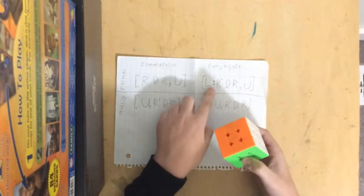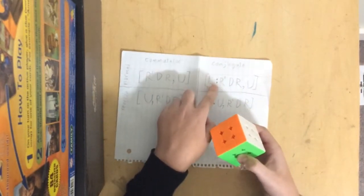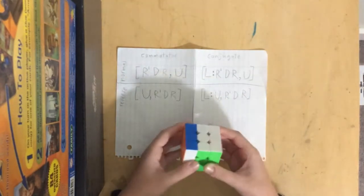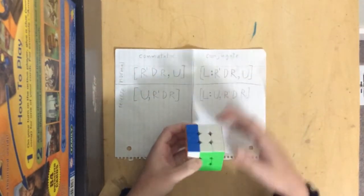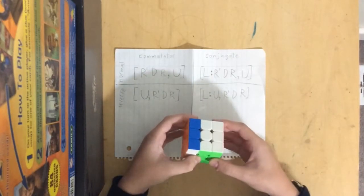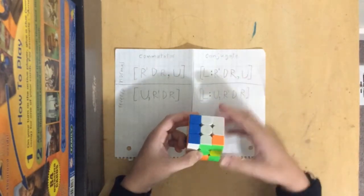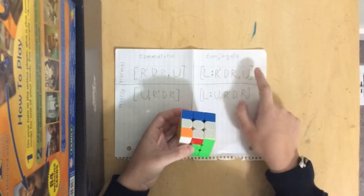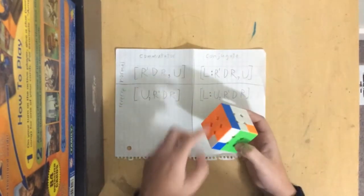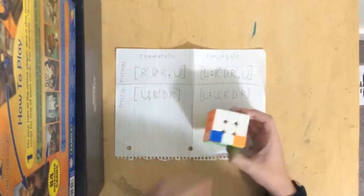And so what we do is we do the one on the left, to the left of the colon first, we do L, then we do all these moves, which is actually a commutator because it has a comma here. So R' D' R, and then U, and then we go back here, R' D' R, and then we go back here, U' and then we reverse the L with an L' at the end.